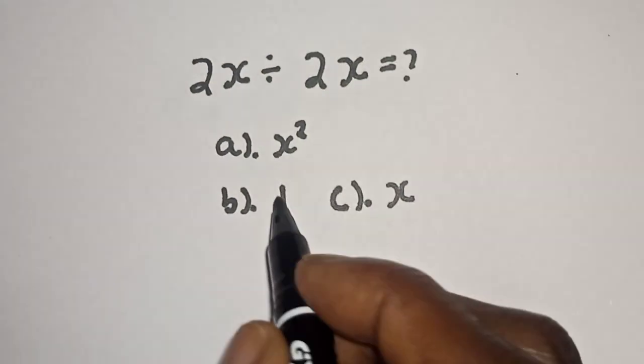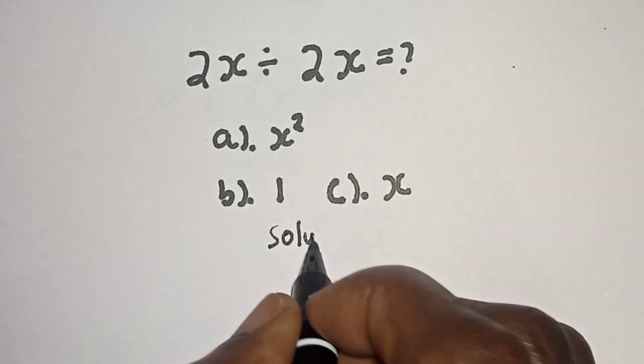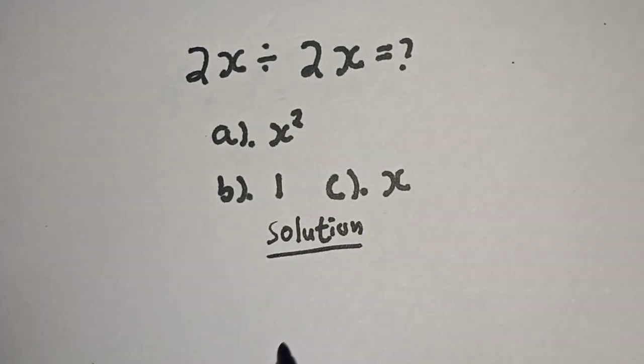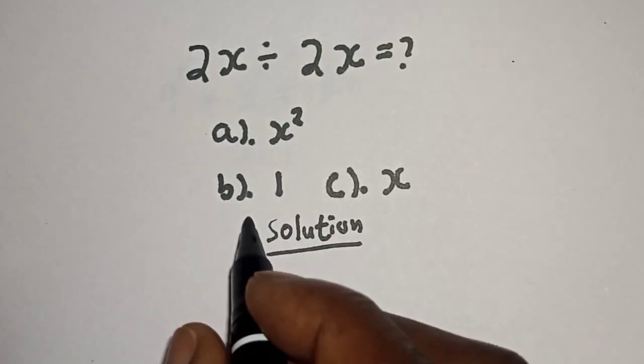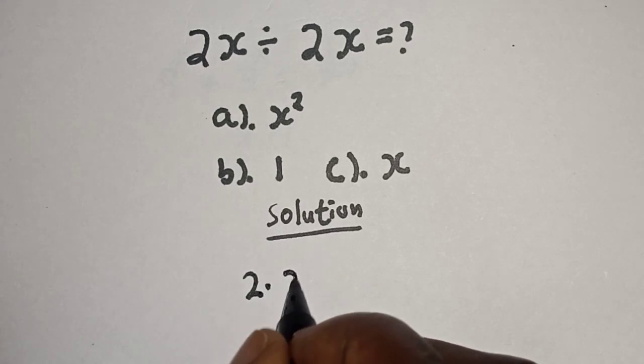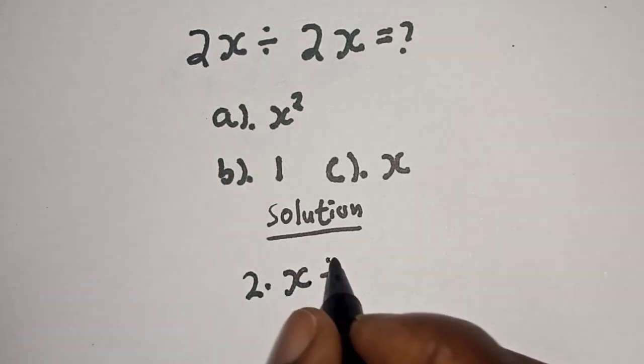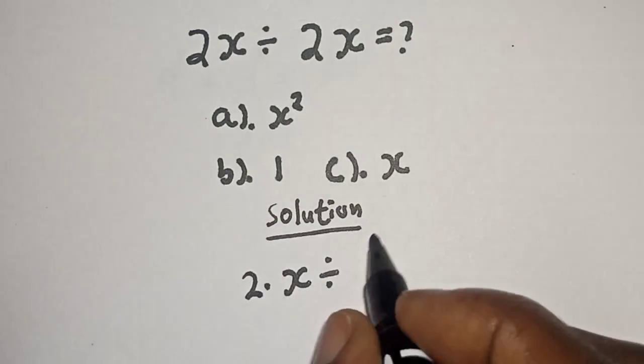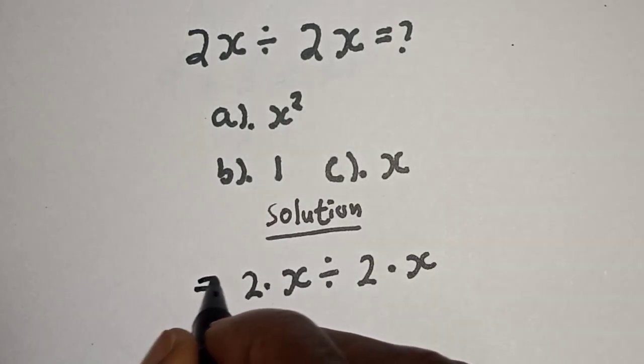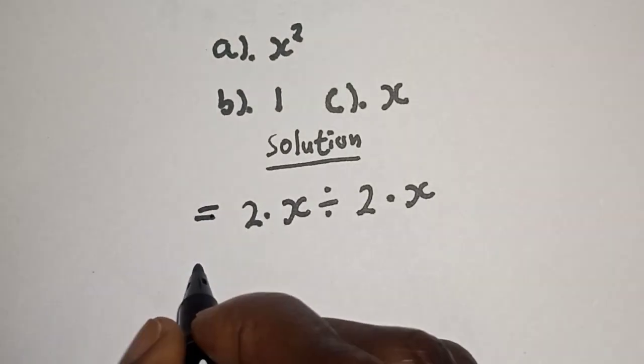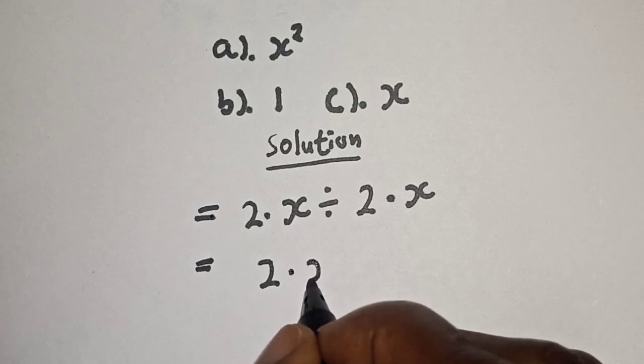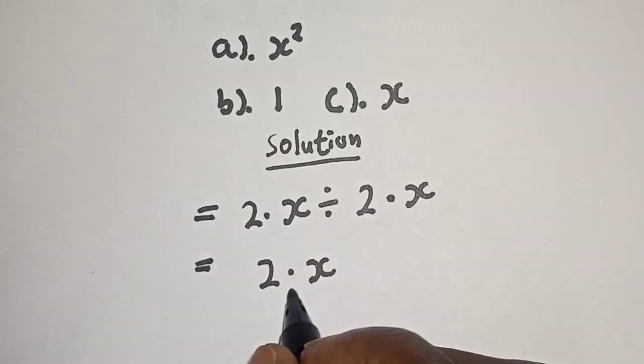Solution: We have 2x divided by 2x, which can be written as 2 multiplied by x divided by 2 multiplied by x. This is equal to 2 multiplied by x, then divided by 2, multiplied by x. These 2s will cancel, so we have